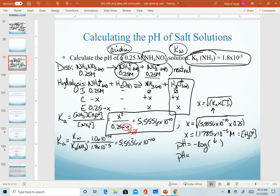This is acidic, so we expect a fairly low value. This is 4.93. Two sig figs in concentration and Kb, so we have two decimal places in pH.